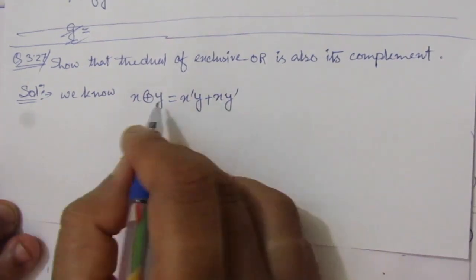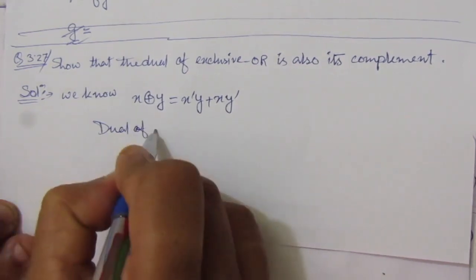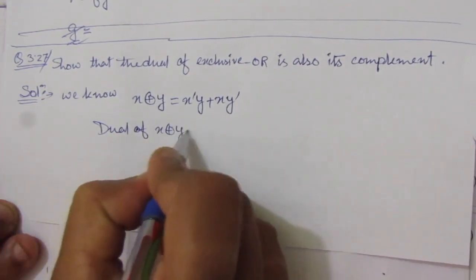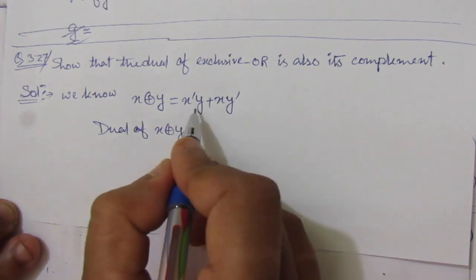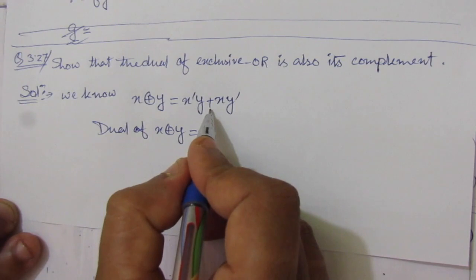Now, what we have to find is the dual of XOR. So, dual of x XOR y. What we have to do is replace the multiplication with addition and replace addition with multiplication.